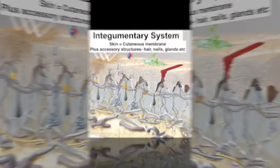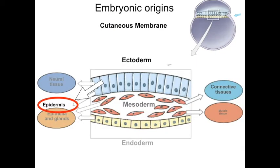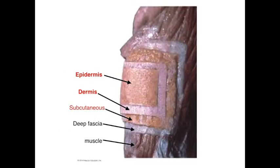Like any membrane, the cutaneous membrane consists of two layers: an epithelial layer overlying a connective tissue layer. The epithelial layer is derived from the ectoderm, which also gives rise to the nervous system, while the dermis is made out of connective tissue derived from the mesoderm. Two tissues combined to form a common function makes an organ, which makes your skin an organ — actually the largest organ, even if it's relatively simple.